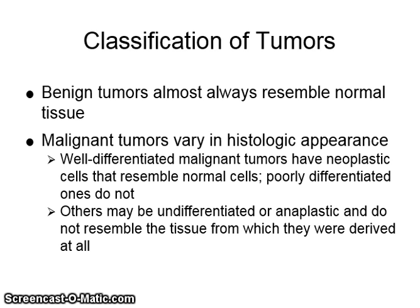Benign tumors almost always resemble normal tissues. Malignant tumors vary in histologic appearance. Well-differentiated malignant tumors have neoplastic cells that resemble normal cells. Poorly differentiated ones do not. Others may be undifferentiated or anaplastic and do not resemble the tissue from which they were derived at all.